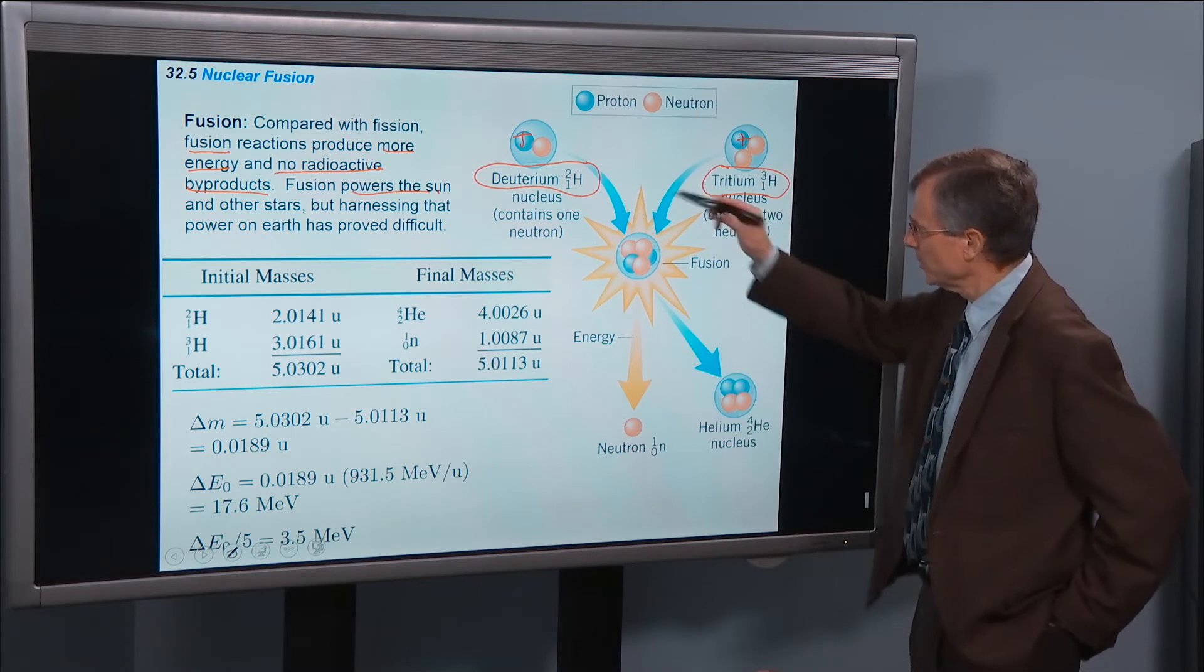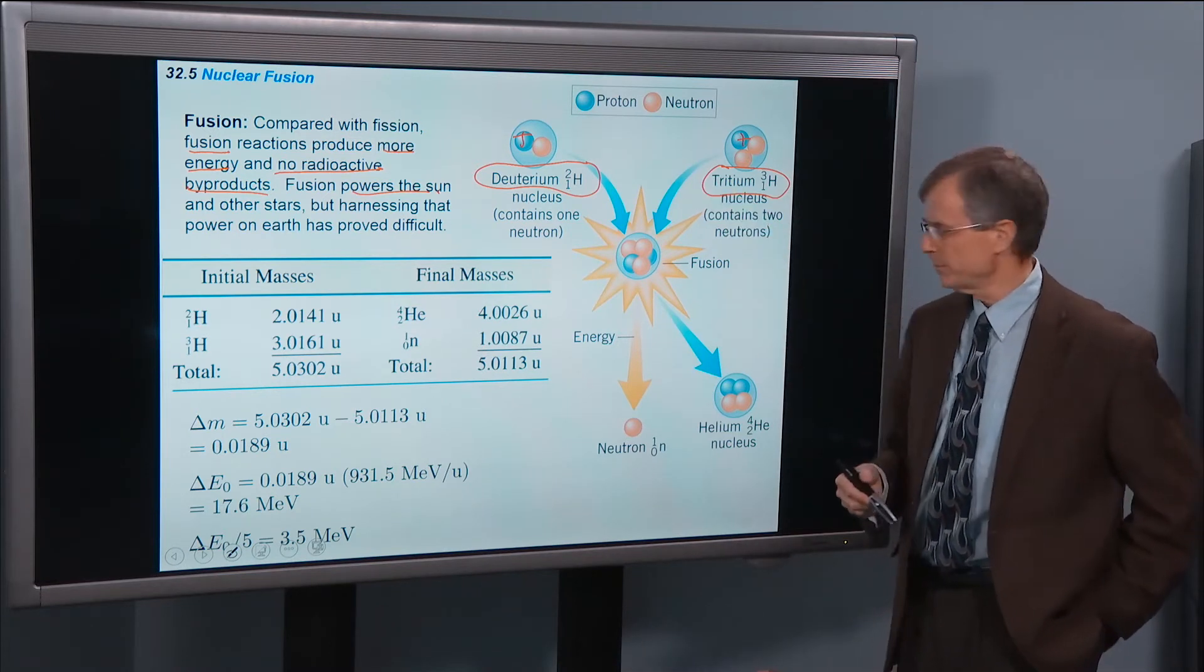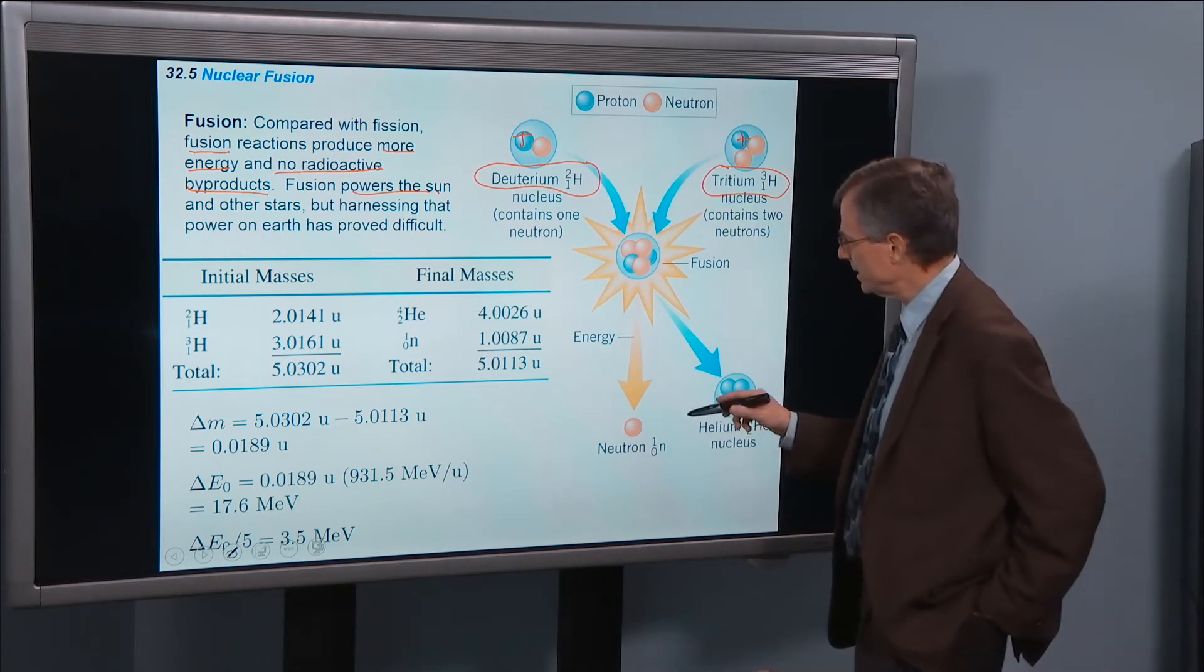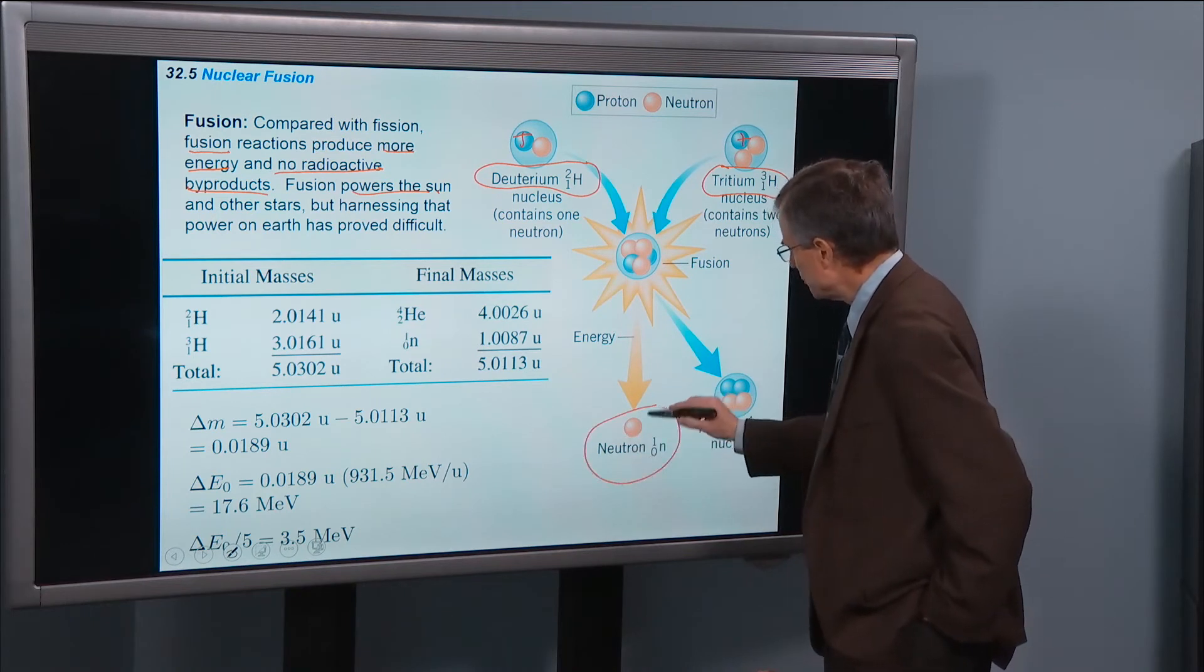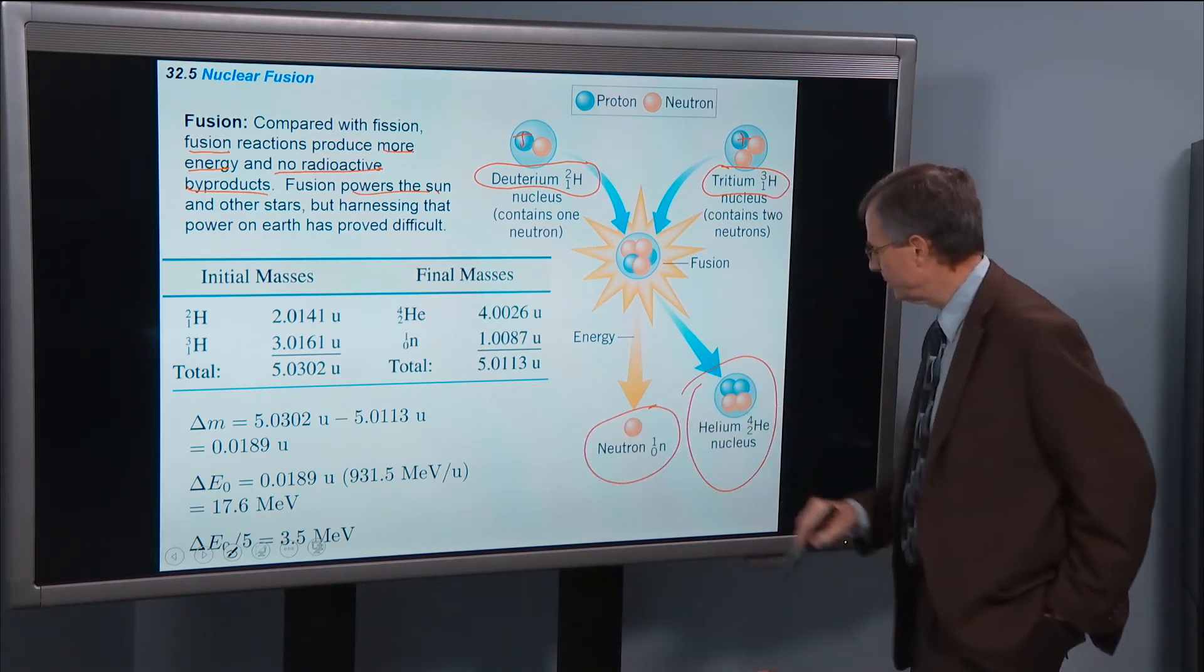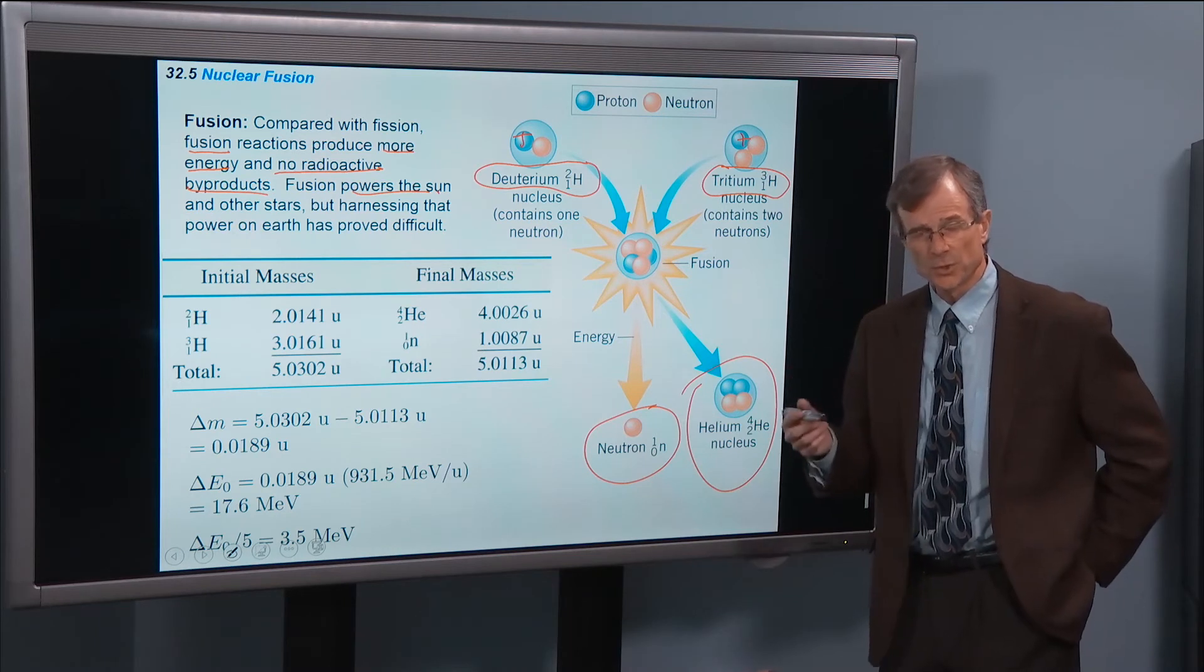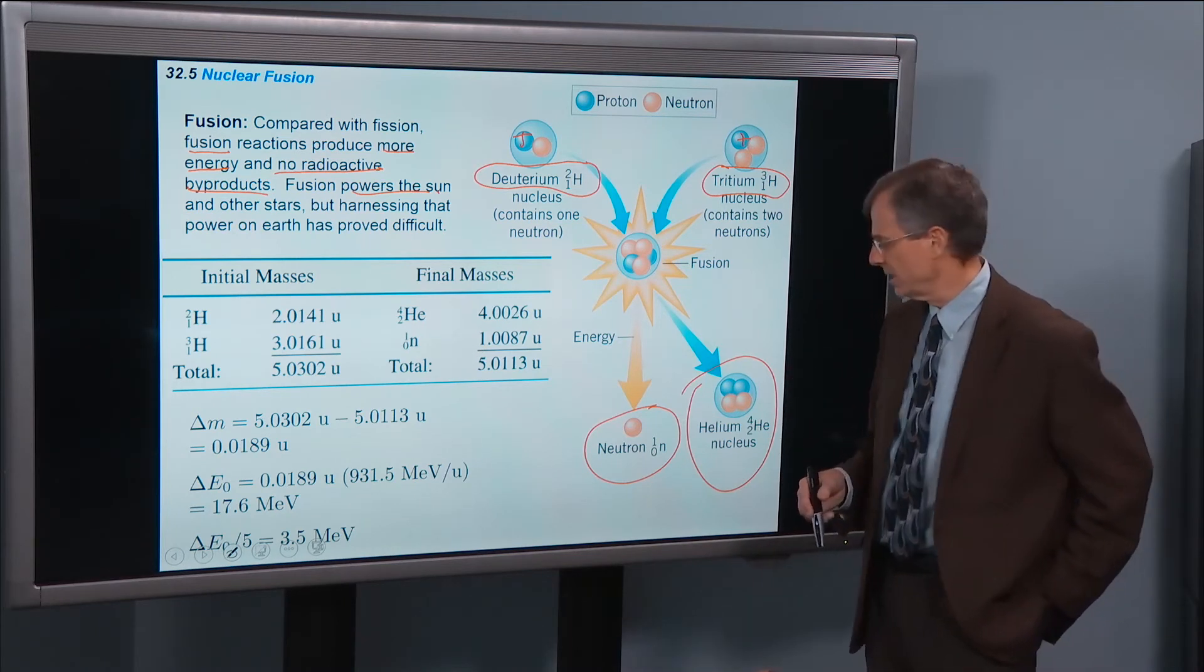And you bang those two together hard enough at a high enough temperature, then what you get is some energy. You get a neutron out of the deal and you get a helium nucleus. Let's count to make sure that we've preserved the number of nucleons.